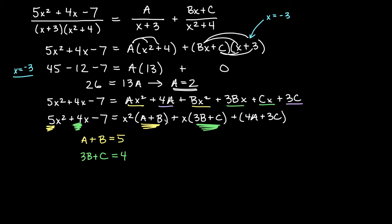And last I have negative 7 for a constant there. My constants are over here 4A plus 3C, so that tells me 4A plus 3C is equal to negative 7. The good news is I already know A. A is 2.